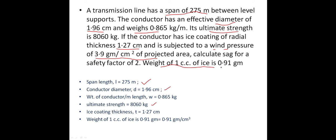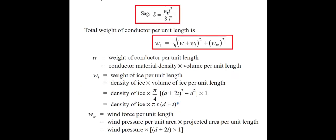Weight of 1 cc of ice is 0.91 gram — cc means cubic centimeter. They may also give it directly as 0.91 gram per centimeter cube. The SAG formula when wind and ice are present is: S = (Wt × L²) / (8T), where Wt is total weight. The total weight formula is: Wt = √[(W + Wi)² + Ww²].